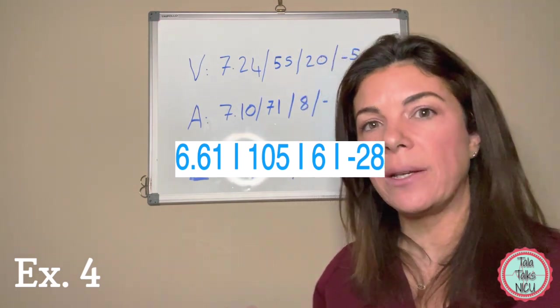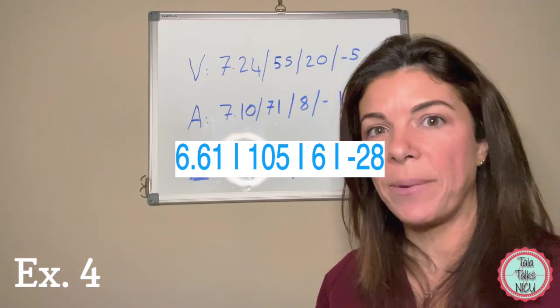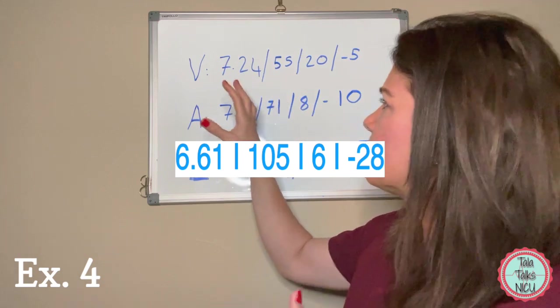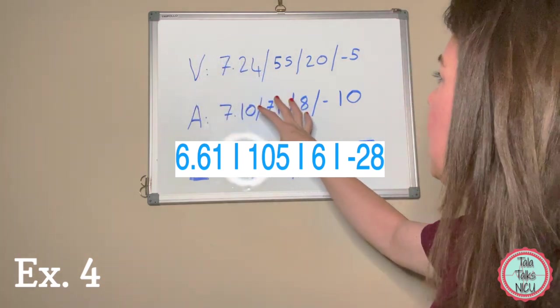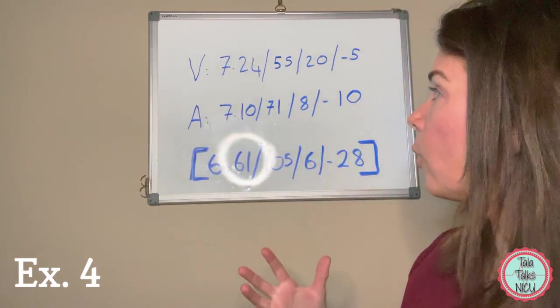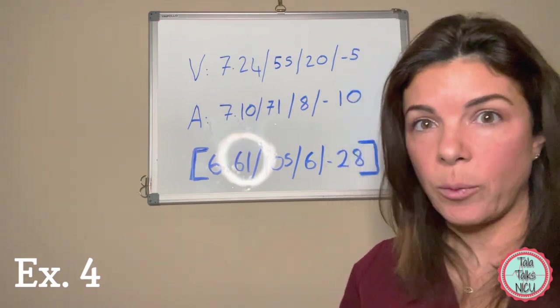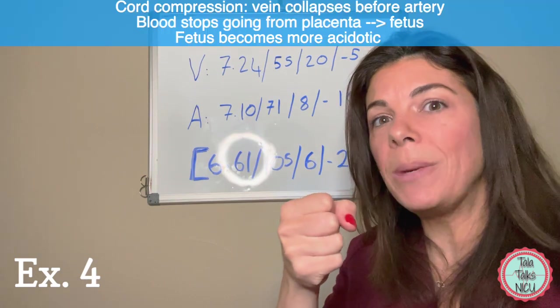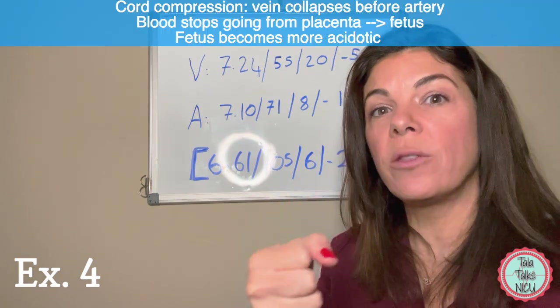Towards the end of the resuscitation, they got a pH from the umbilical vein of the baby and it was 6.61 with a minus 28, way way worse than the cord blood gases. So what do we actually think happened here? For everybody that watched the first video, at the end I gave an example of a cord compression and what happens with the blood gases there. Here you can see that at least part of this is probably because of cord compression.